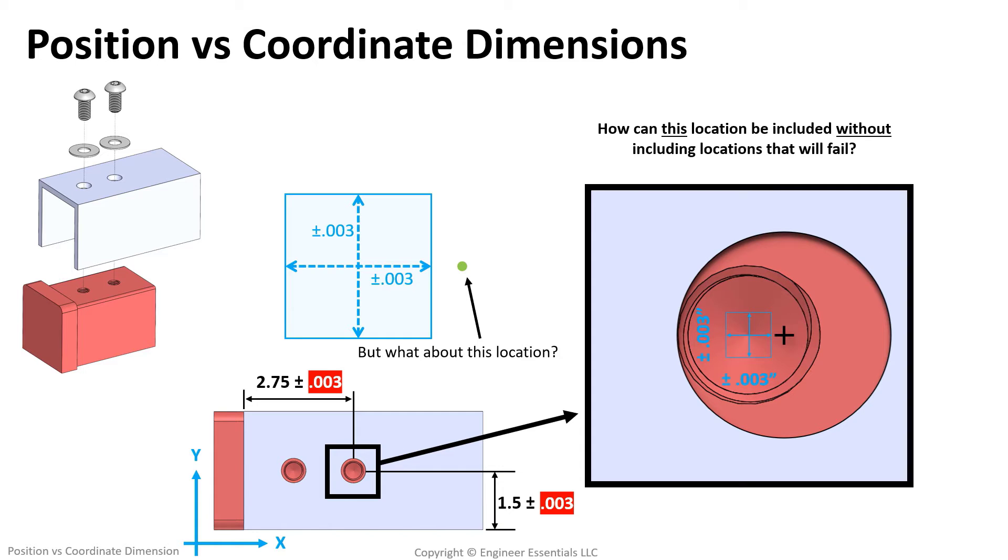With coordinate dimensions, we either have to reject good parts or pass bad parts. You have to do one or the other, there's no way around it with coordinate dimensions.